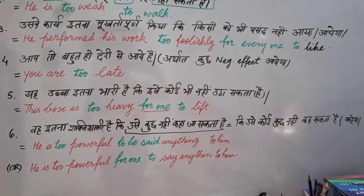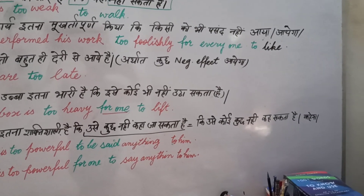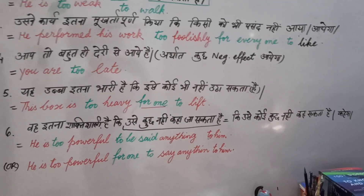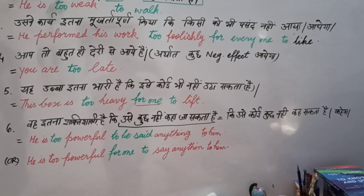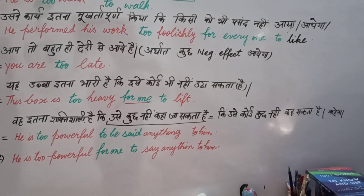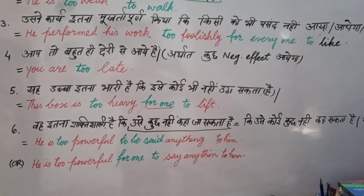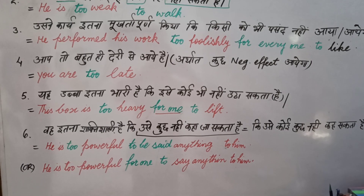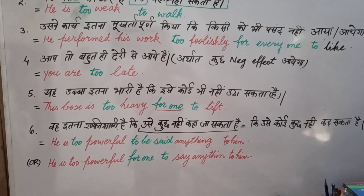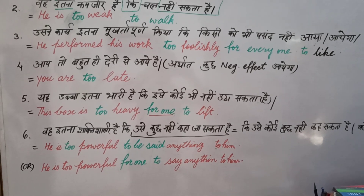Sentence number six: 'Uvai itana shakti shali hai ki usay kuch nahi ka ja sakta' — the underlined portion can also be written as 'ki usay koi kuch nahi ka sakta hai.' Both are the same. You don't go after the written words; you go after the sense. So the translation will be: 'He is too powerful to be said anything to him.' Or you can also write: 'He is too powerful for one to say anything to him.'